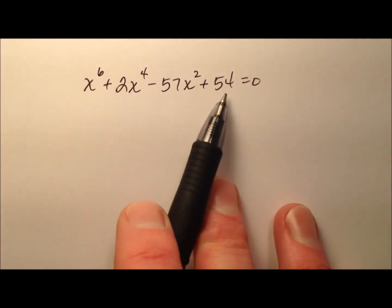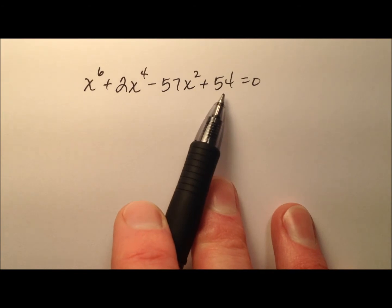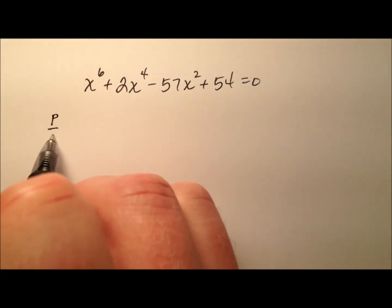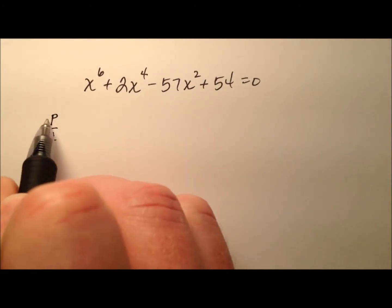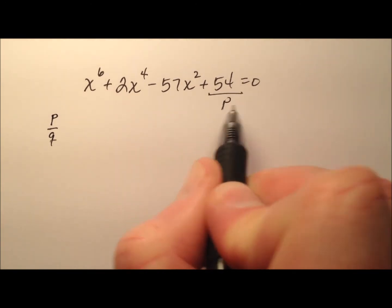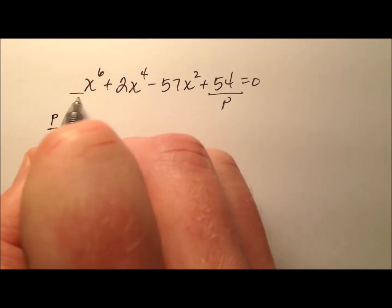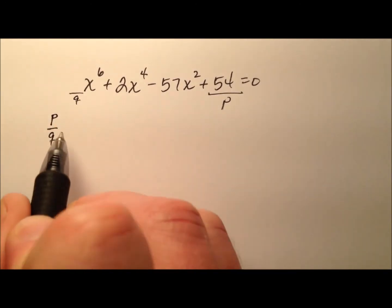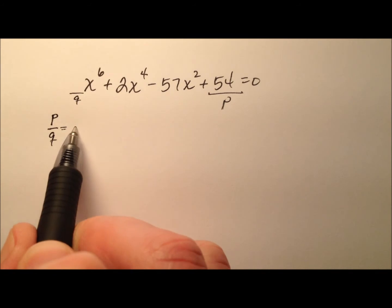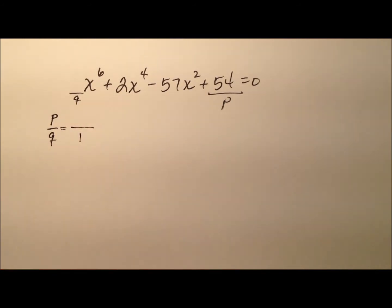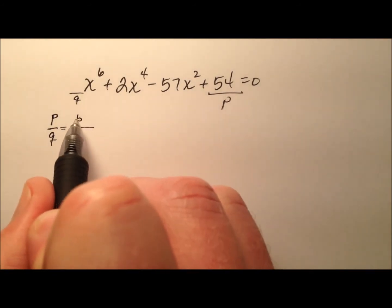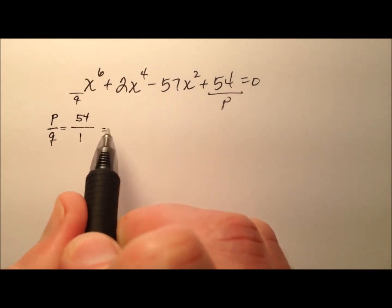The rational root theorem has to do with that P over Q business. P is going to be our constant and Q is going to be our leading coefficient. It's nice because our leading coefficient is 1 and P is 54.